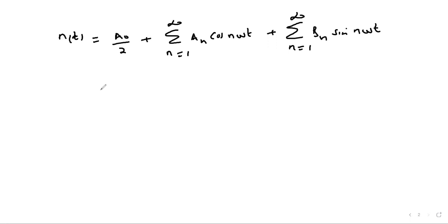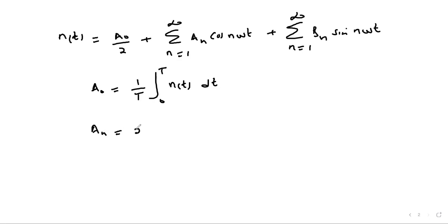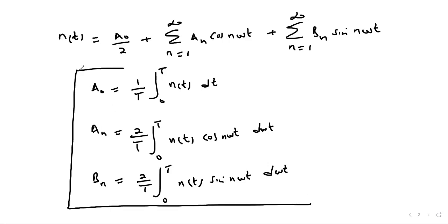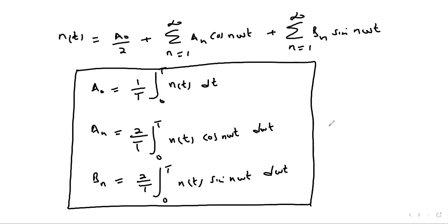The coefficients are obtained as follows: a₀ = (1/T)∫₀ᵀ n(t) dt, where T is the period of n(t). aₙ = (2/T)∫₀ᵀ n(t) cos(nωt) d(ωt). And bₙ = (2/T)∫₀ᵀ n(t) sin(nωt) d(ωt). These are the values of the coefficients in our Fourier series expansion of the output n(t).